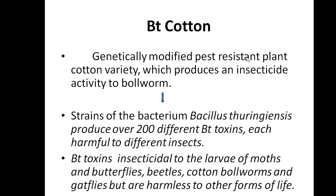BT cotton is a genetically modified insect-resistant cotton variety which produces insecticidal activity against bollworm. A cotton plant is most probably 90% affected by bollworm. Bollworm is a type of insect that most frequently attacks the cotton plant. So we have to create some insecticide activity in the plant. The bacterium Bacillus thuringiensis produces 200 different types of BT toxins.